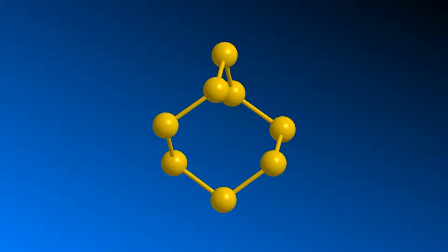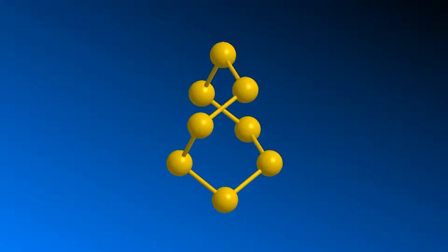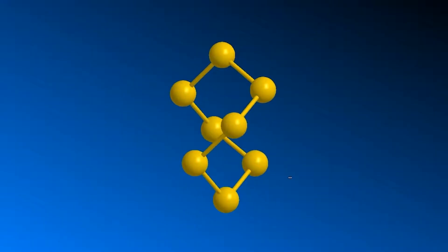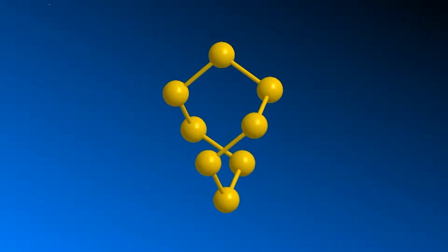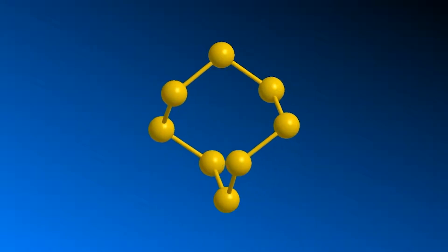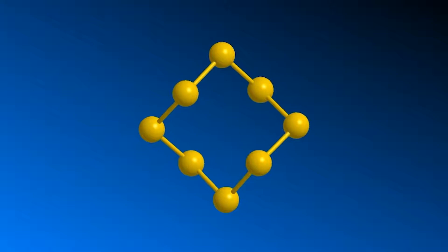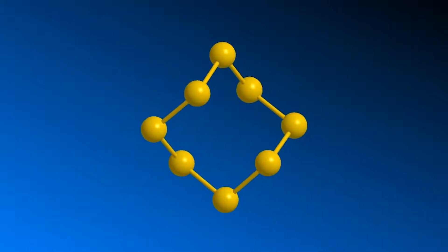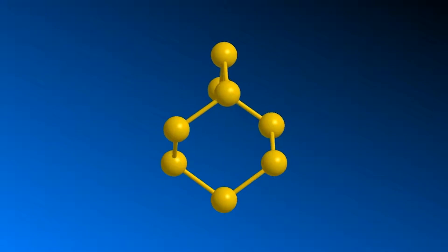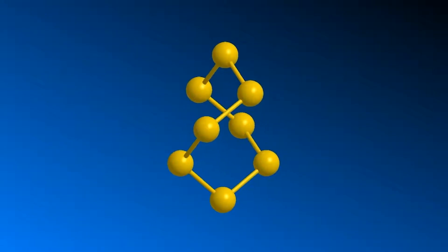The reason behind that: sulfur has a large atomic size, which allows each sulfur atom to singly bond to another sulfur atom. As each sulfur atom needs two electrons to fill the p orbital, each sulfur atom singly bonds to two sulfur atoms, and the result is a puckered ring which contains eight sulfur atoms singly bonded to each other.